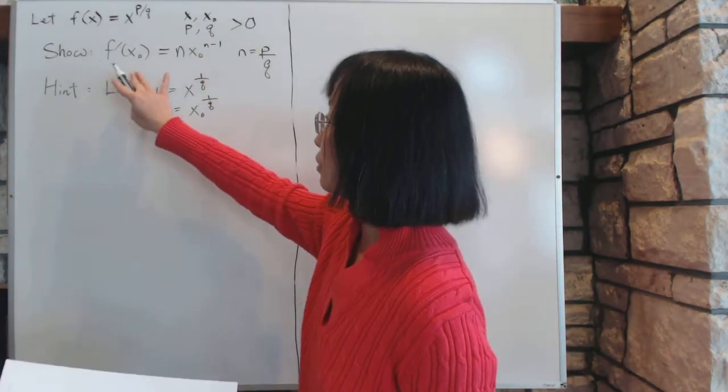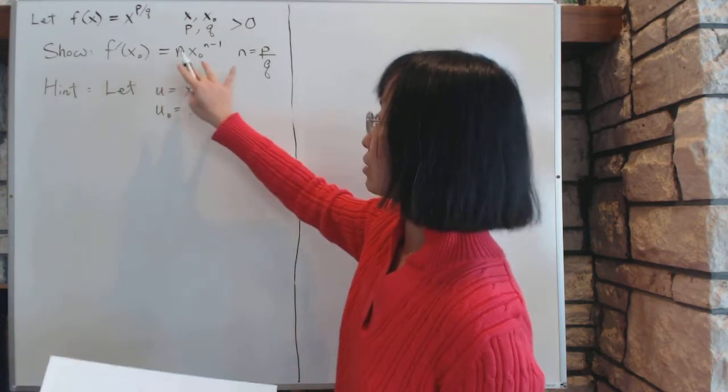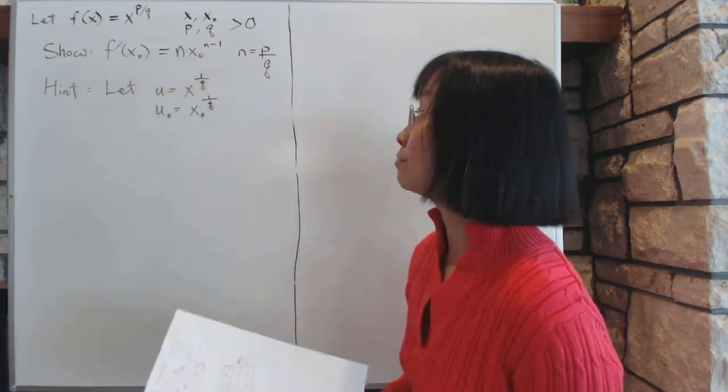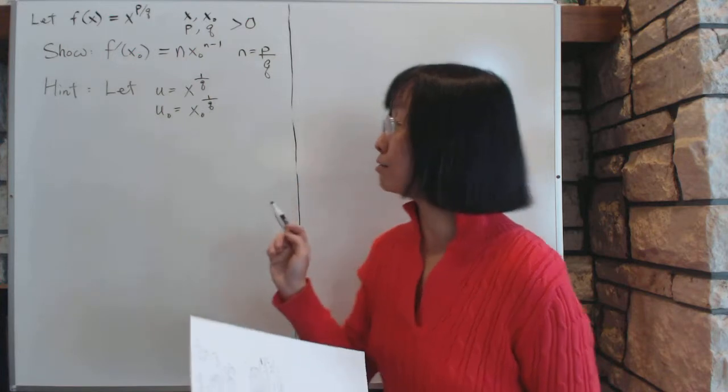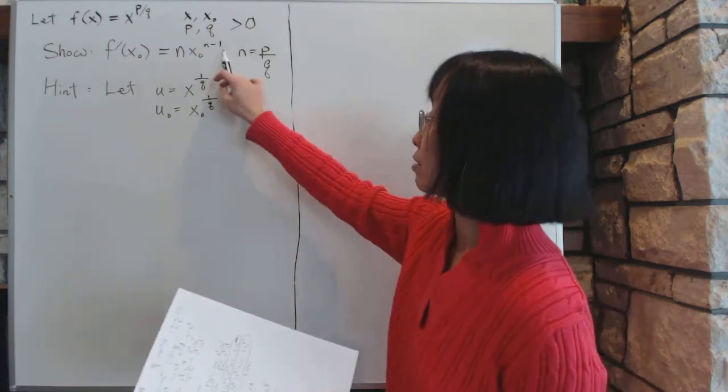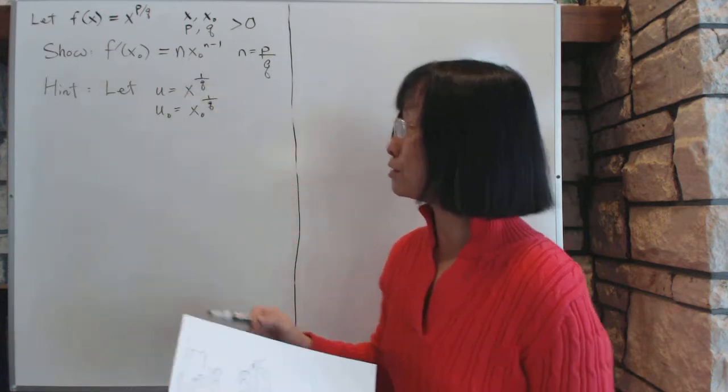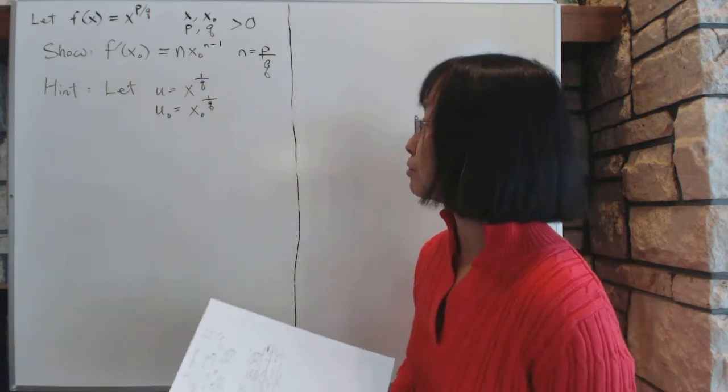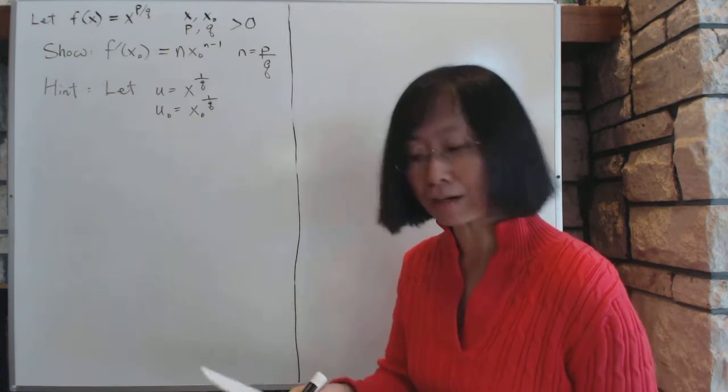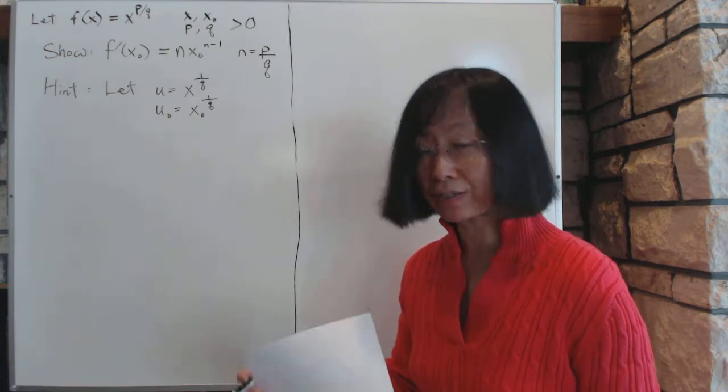So we're just supposed to show f prime x0 equals n x0^(n-1). Now that is a very fundamental formula from elementary calculus where n is p over q. But suppose you have to prove it. How would you go about proving it with just the fundamental definition of the derivative?